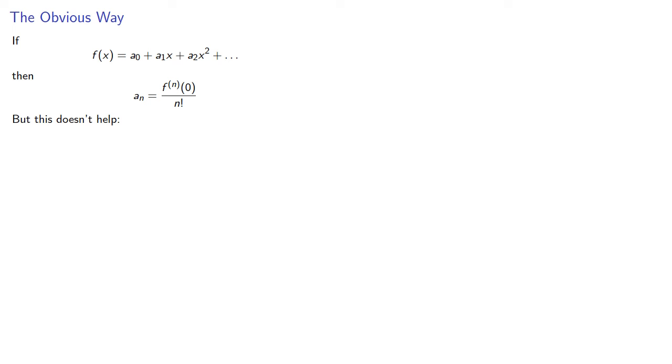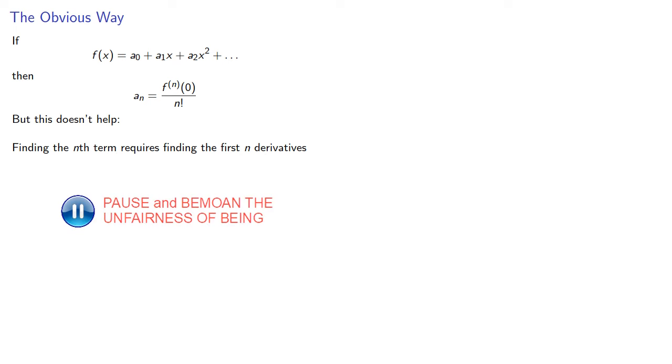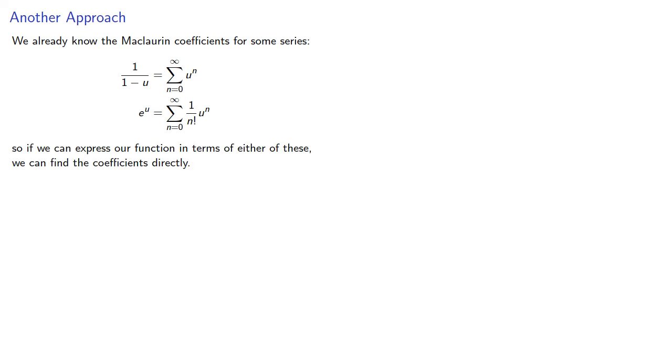But this doesn't help since finding the nth derivative requires finding the first n derivatives. So how can we avoid this? We already know the Maclaurin coefficients for some series, 1 over 1 minus u and e to the u. So if we can express our function in terms of either of these, we can find the coefficients directly.